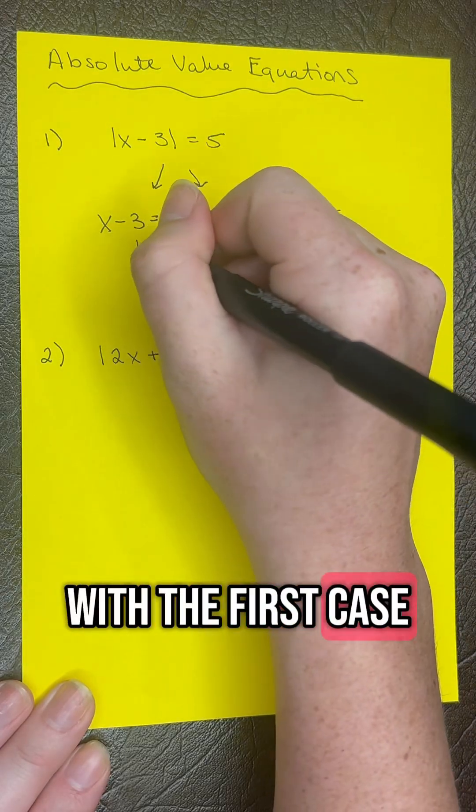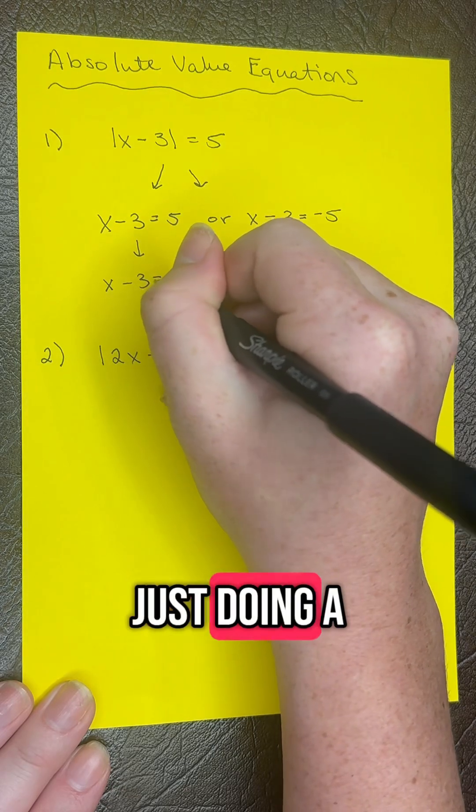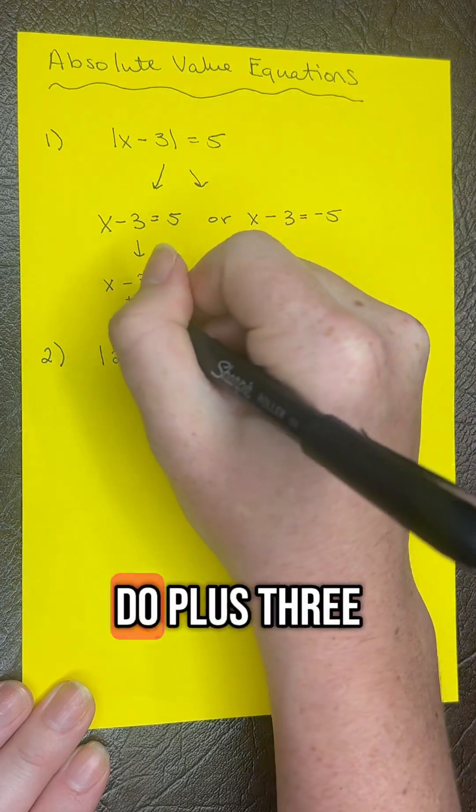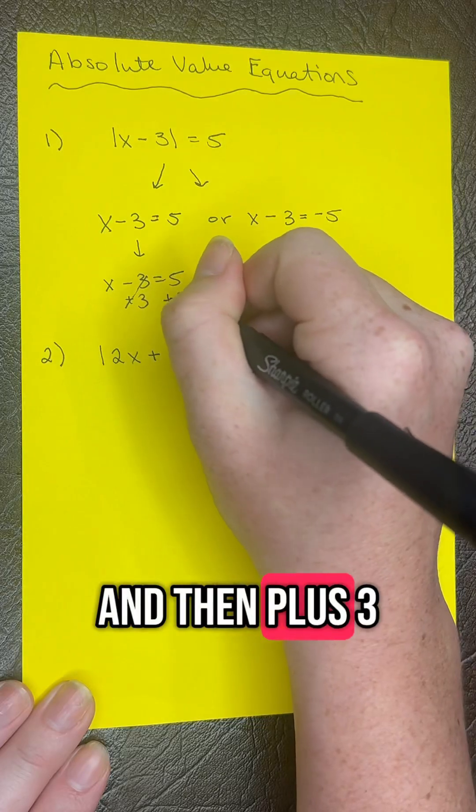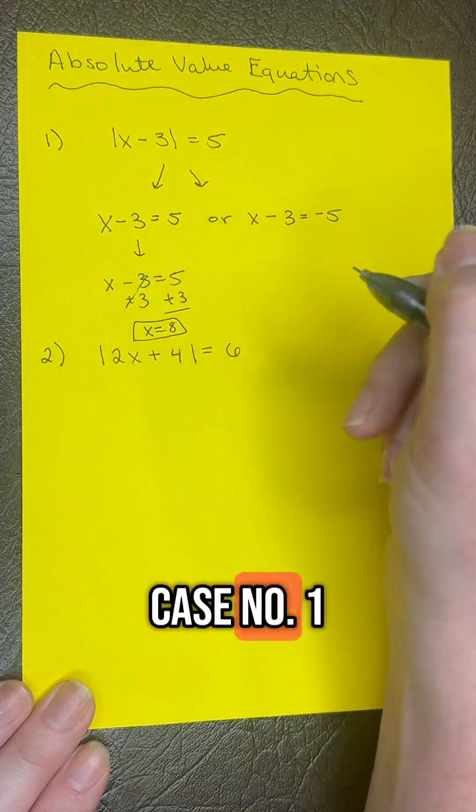Let's start with the first case. We're going to add 3 to both sides. We're just doing a rewrite here - plus 3 and plus 3. So we get x equals 8 for case number 1.